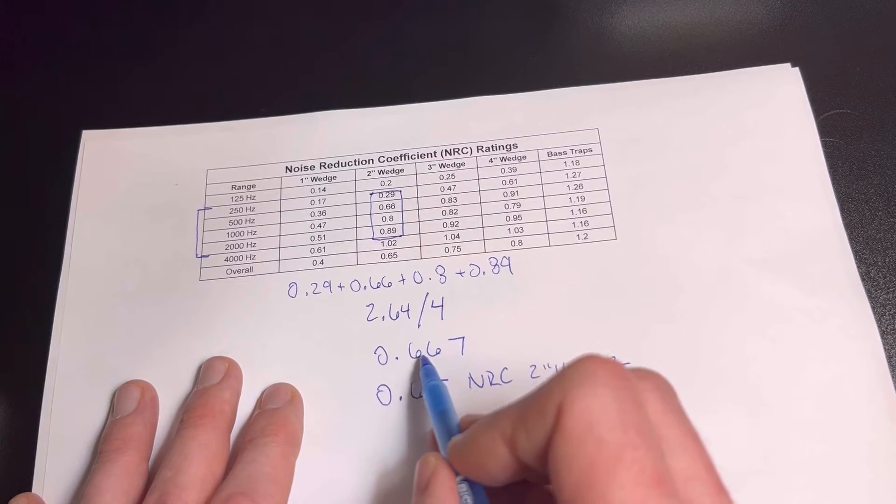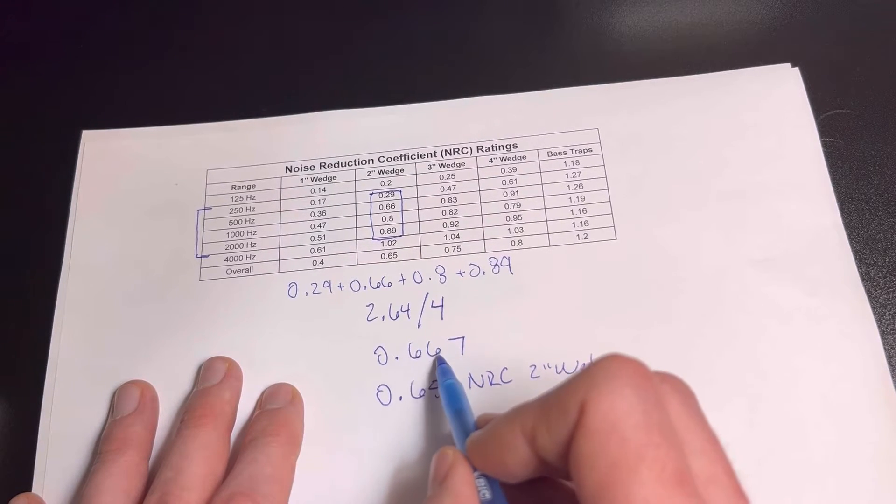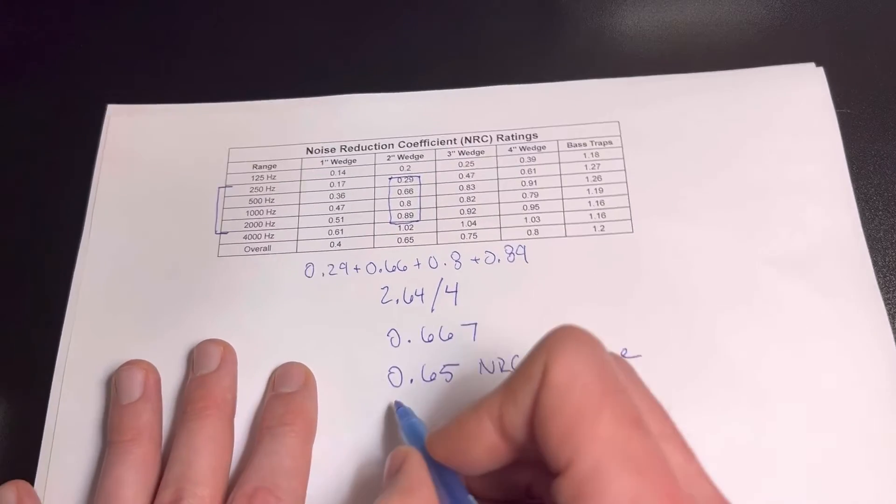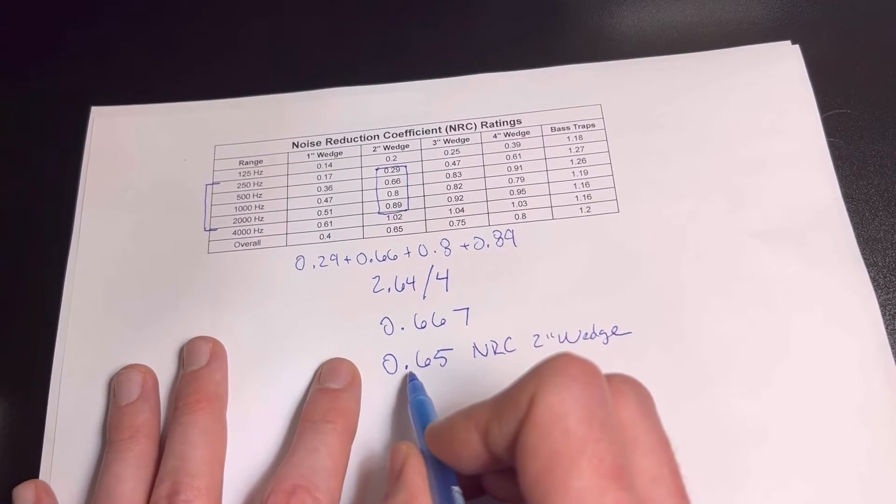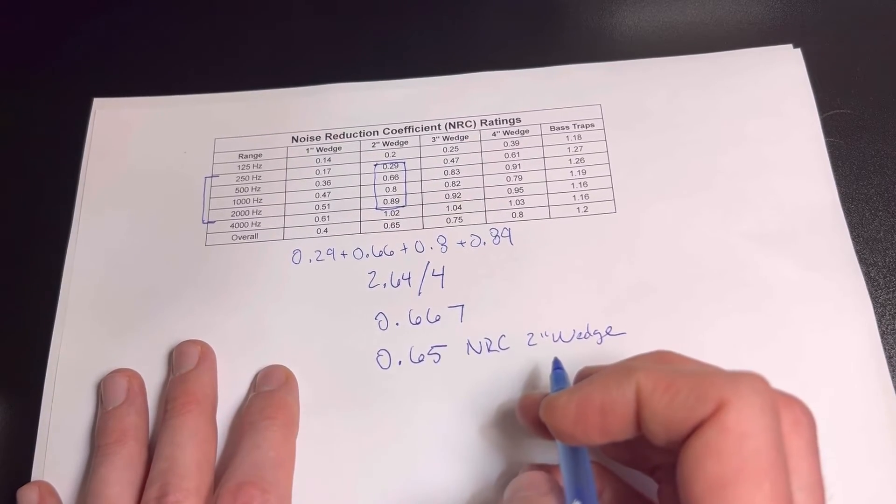So if this was 0.68, this would round up to 70. But this one is 0.65, so you can say that the two inch wedge is going to absorb about 65% of the sound.